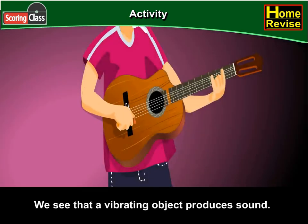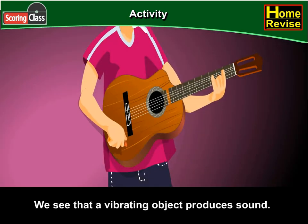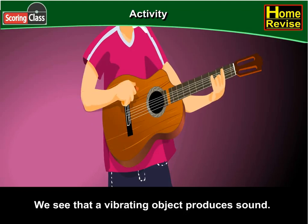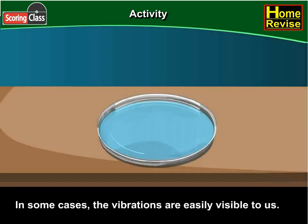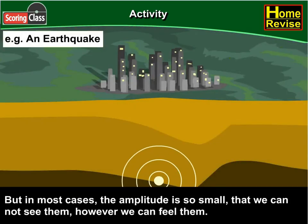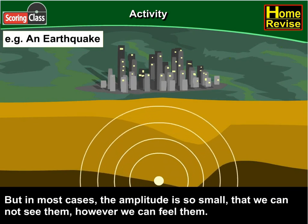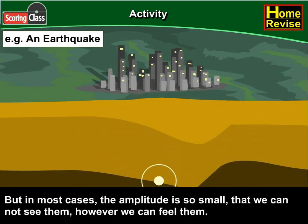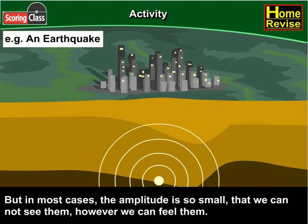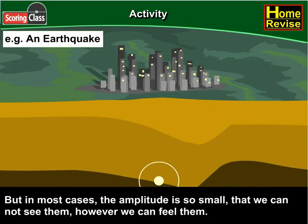We see that a vibrating object produces sound. In some cases, the vibrations are easily visible to us. But in most cases, the amplitude is so small that we cannot see them. However, we can feel them.